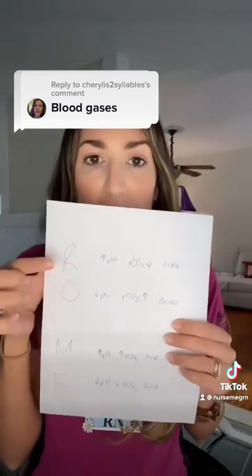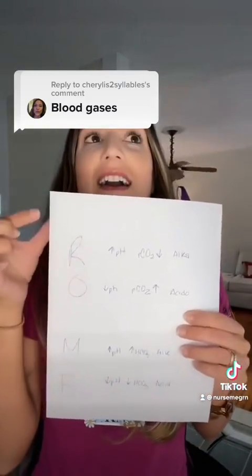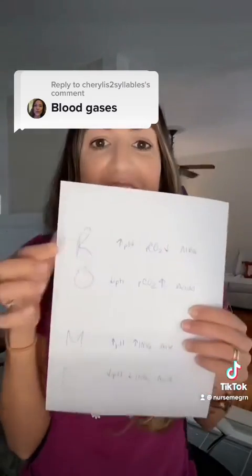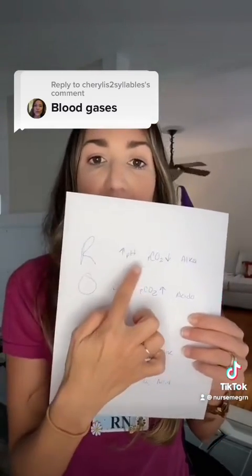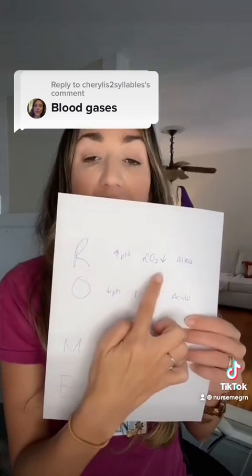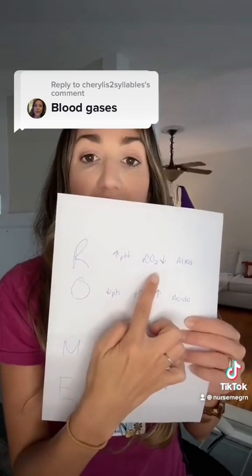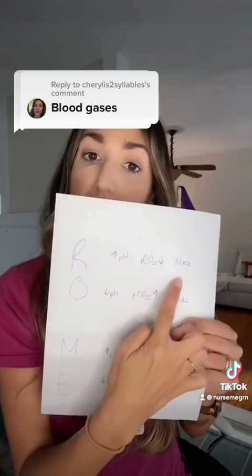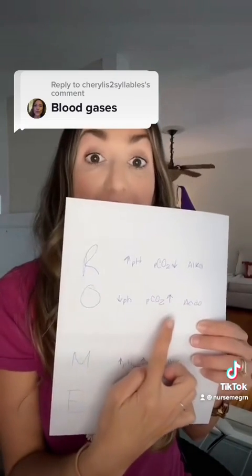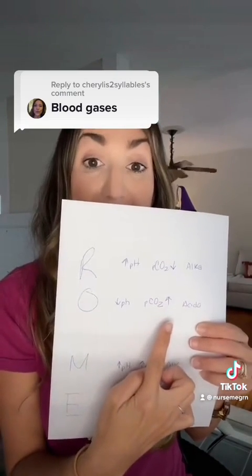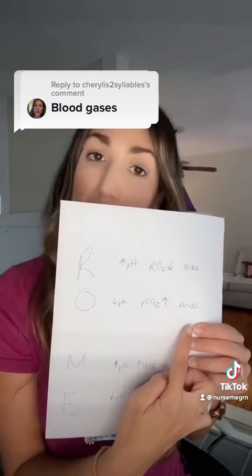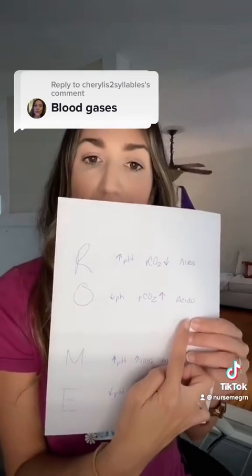In respiratory blood gases, you are looking at the pH. If the pH is high and the carbon dioxide is low, you're in respiratory alkalosis. If the pH is low but the CO2 — or PCO2 — is high, you are in respiratory acidosis.